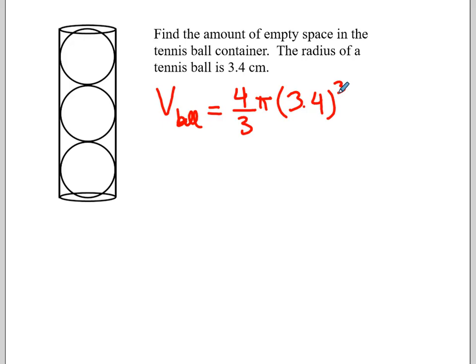We will let our calculator do the heavy lifting here. So we will go 4 divided by 3 times π times 3.4 all cubed. Please make sure you use cubed and not squared. And we should get a volume of the ball at 164 cubic centimeters.